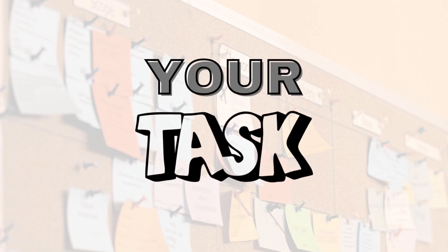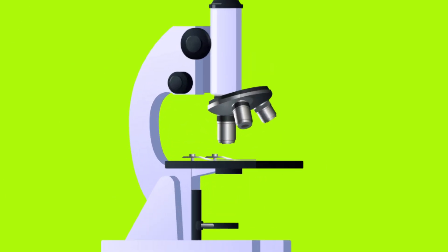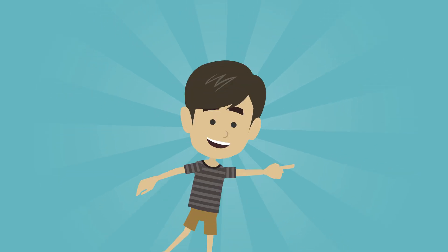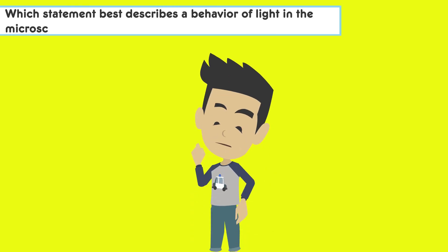So here's your task. Observe the diagram and think about how light behaves as it passes through the microscope lens. Here's your question for part A. Which statement best describes the behavior of light in the microscope? Select two correct answers.